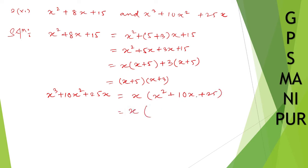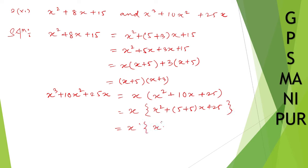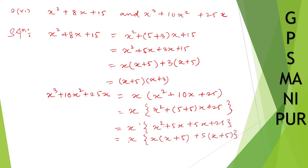Now 25 equals 5 times 5, so we split the middle term: x squared plus 5x plus 5x plus 25. Taking x common from the first two terms gives x(x plus 5), and taking 5 common from the last two terms gives 5(x plus 5). So the second polynomial factors as x(x plus 5)(x plus 5), which is x(x plus 5) squared.